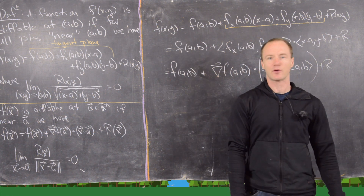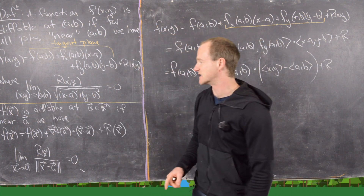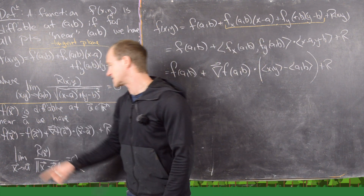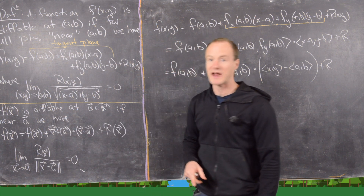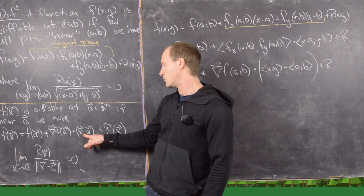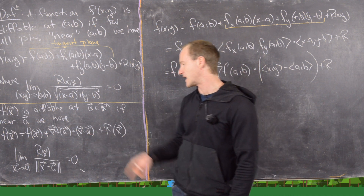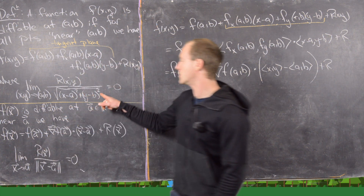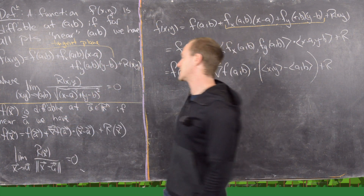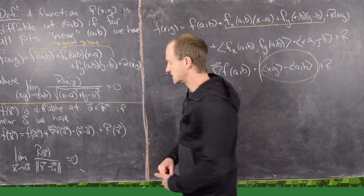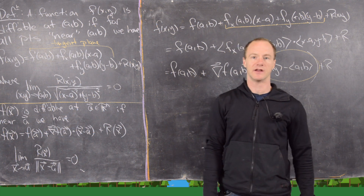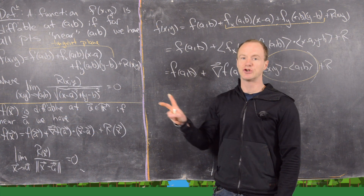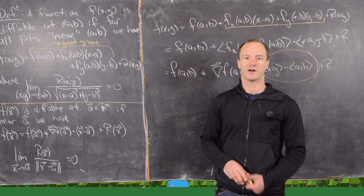So that motivates this vector form of the definition for n variables. We say that f(x) is differentiable at a point a in ℝⁿ if f(x) equals f(a) plus the gradient of f evaluated at a, dotted with (x minus a), plus a remainder function. The denominator in the limit condition is the magnitude of the vector (x minus a), which motivates that appearing in the denominator. We're going to do two examples — one with two variables and one with three variables.